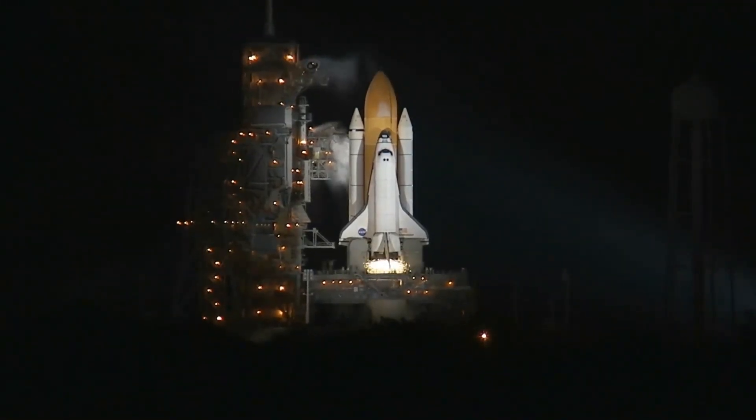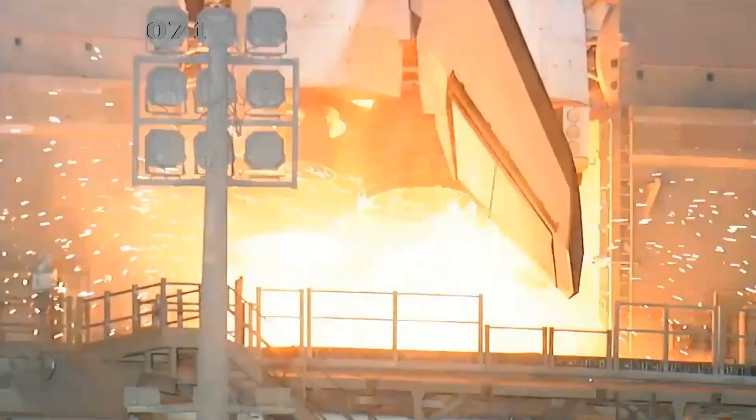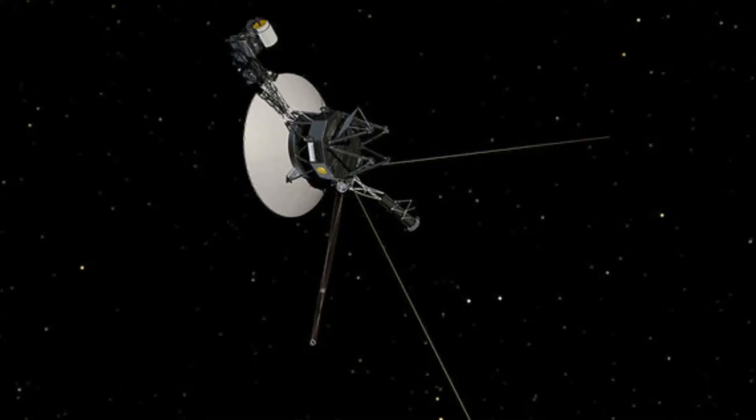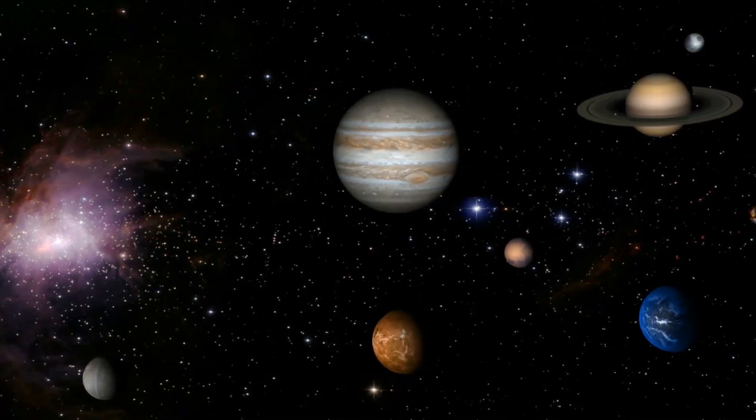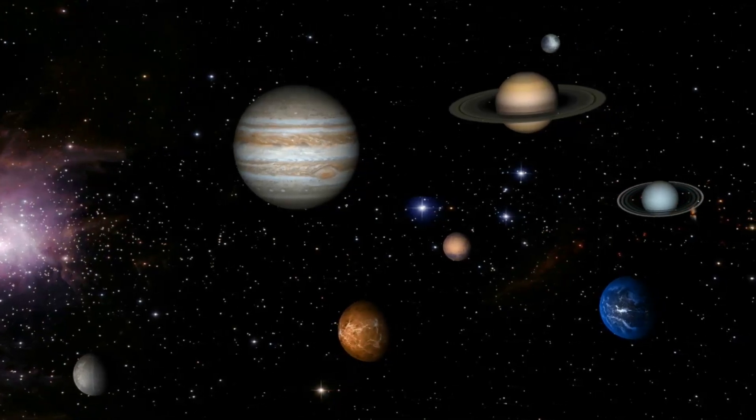The Voyager program is an American scientific program developed by NASA that launched in 1977. The mission consists of two robotic space probes, Voyager 1 and Voyager 2. The scope of the mission was to study the outer part of the solar system and gain knowledge about the outer planets and their moons.